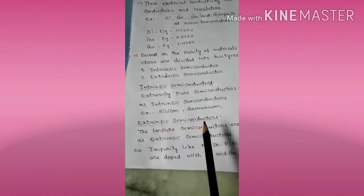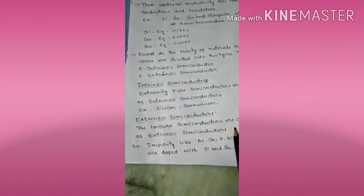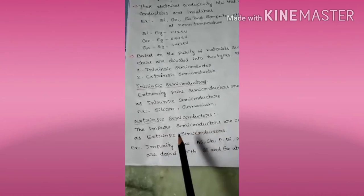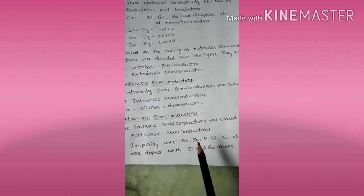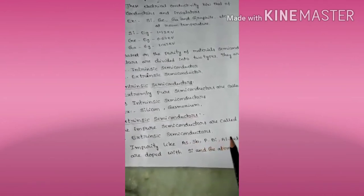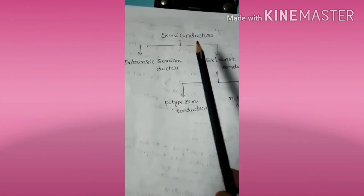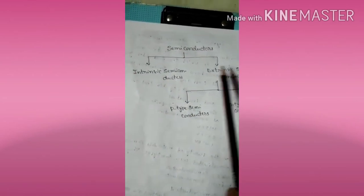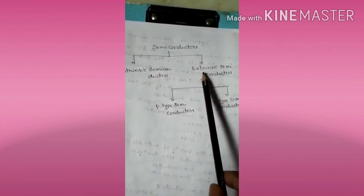Extrinsic semiconductors are formed when impurities are added to a pure or intrinsic semiconductor. Impurity elements such as arsenic, bismuth, phosphorus, and aluminum are doped with silicon and germanium to create extrinsic semiconductors. These are impurity-added semiconductors. The extrinsic semiconductor is again divided into two types.